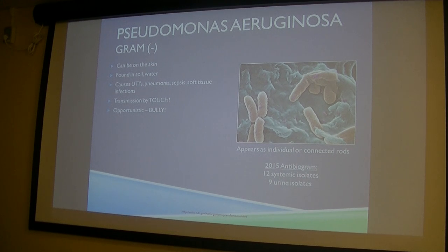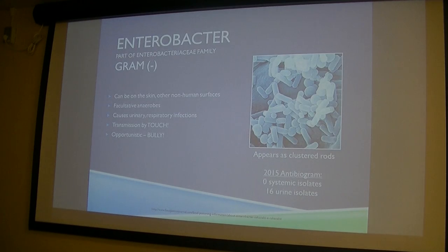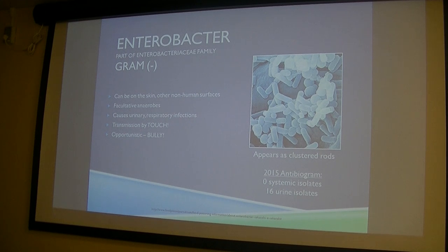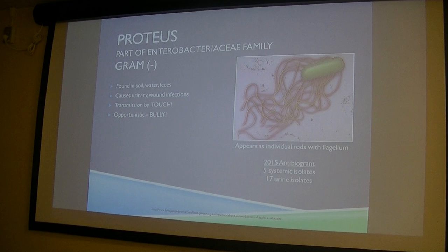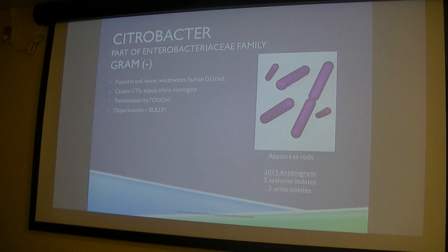Pseudomonas: 12 systemic and 9 urine isolates. It can be on your skin, in soil, in water. Can cause UTIs, pneumonia, sepsis, and soft tissue infections. Transmitted by touch. The Enterobacter family had zero systemic and 16 urine isolates — also transmitted by touch, can cause respiratory infections but is primarily a urinary bug. Then there's Proteus — 5 systemic and 17 urine isolates — same story as most of our gram-negatives.